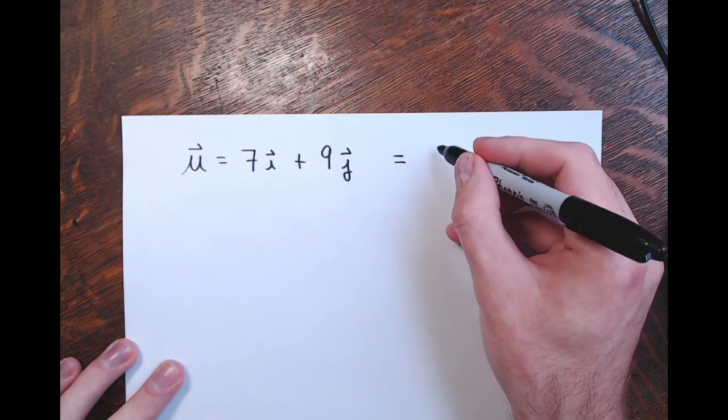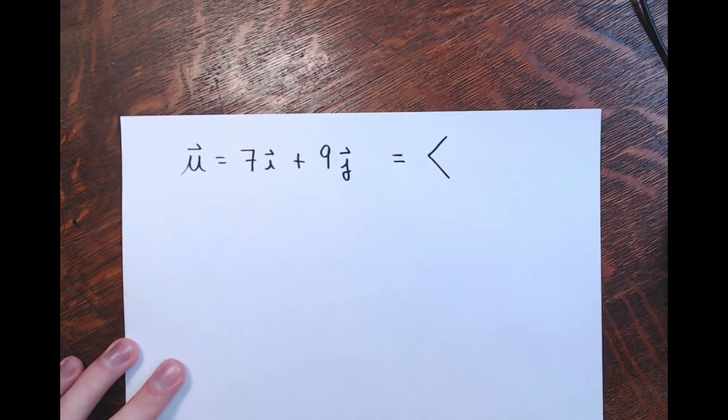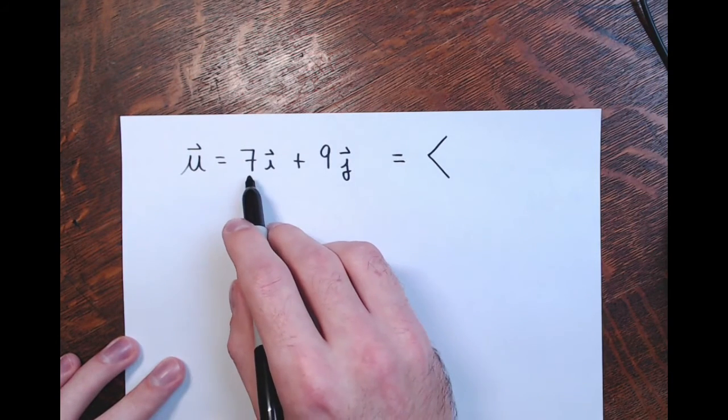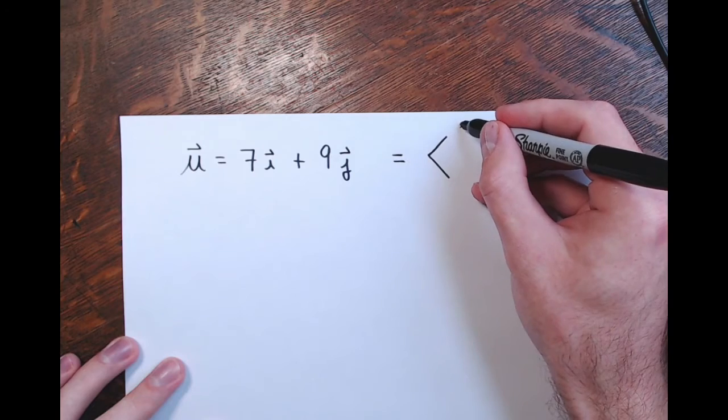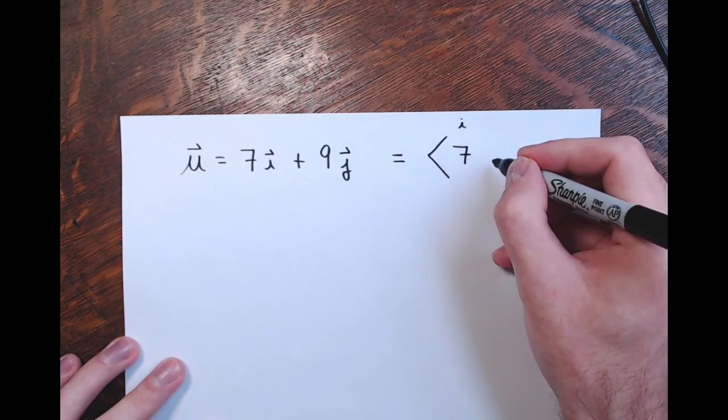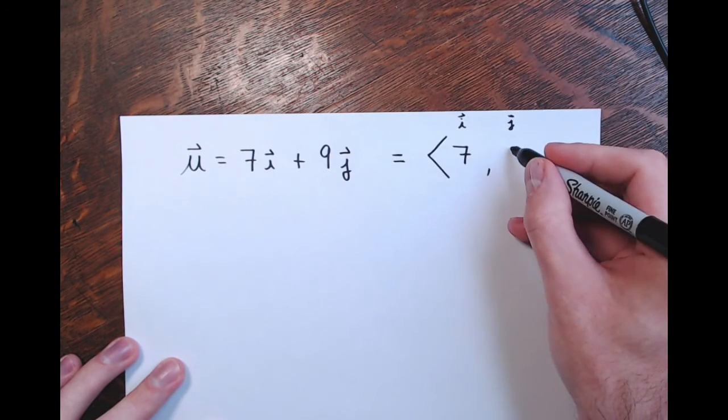If you want, you could rewrite this with that wedge notation, the standard position vector notation, where the i component goes in the first component, so 7, and then the j component is the second component, positive 9. So you could write it like that as well.